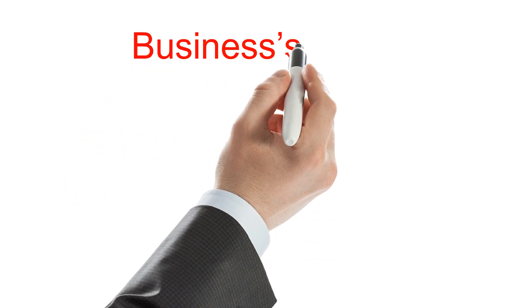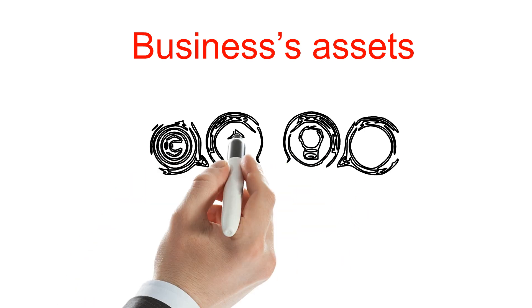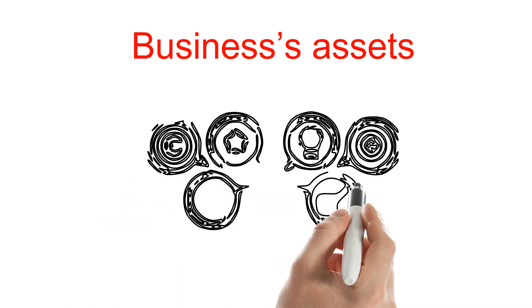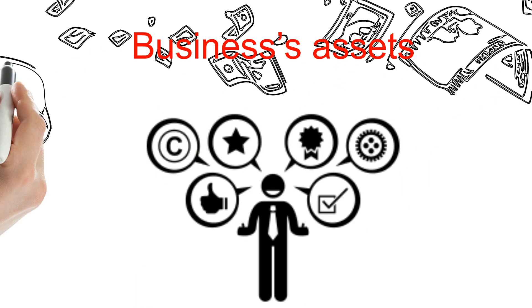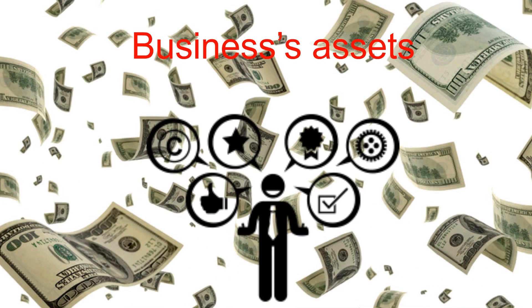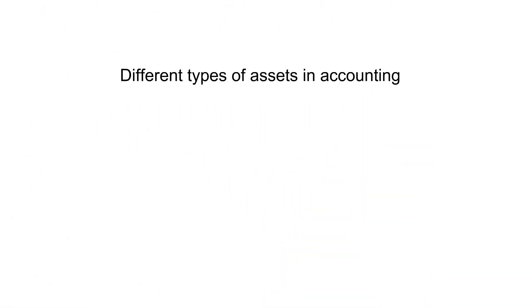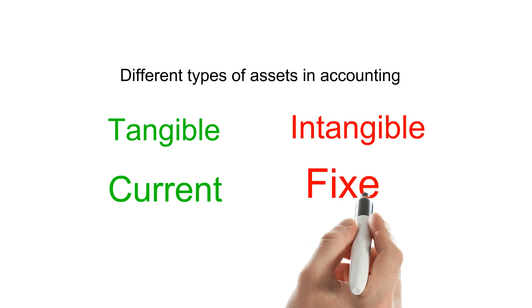Your business's assets are items or resources of value — such as property, inventory, trademarks, or patents — that your business owns. Business owners can opt to convert assets to cash, and many business assets generate revenue and benefit the owner in the long run. There are different types of assets in accounting; you can classify assets as tangible, intangible, current, and fixed.